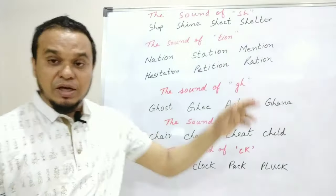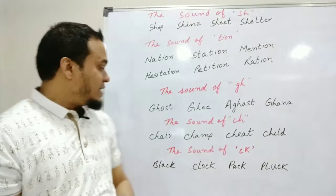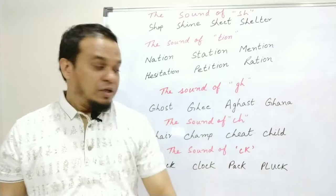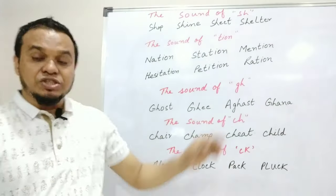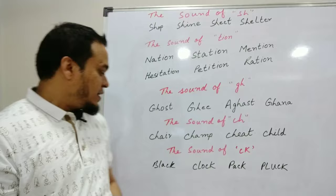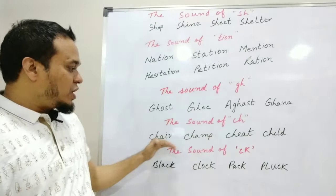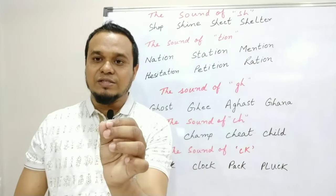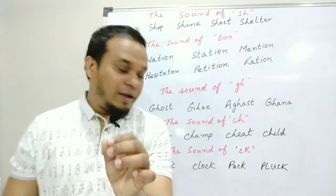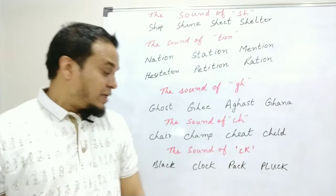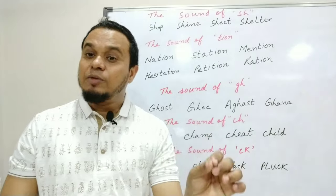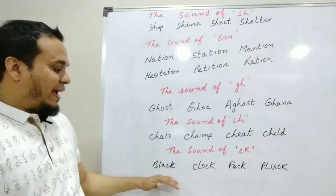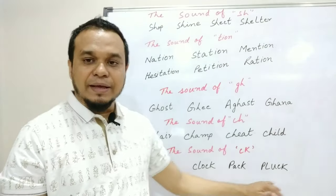The third rule was GH — we read GH as 'g'. For example: GHOST, GHEE, AGHAST, GHANA. The fourth rule was CH — we read CH as 'ch'. For example: CHAIR, CHAMP, CHEAT, CHILD. And the last rule is CK — in an English word, if there is a 'k' sound at the end, we write it as CK. For example: BLACK, CLOCK, PACK, PLUCK.